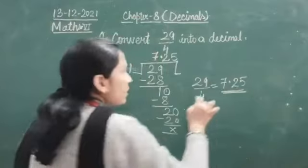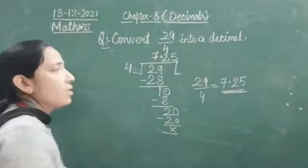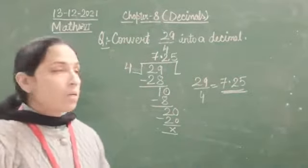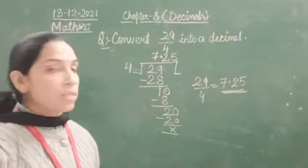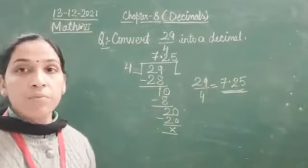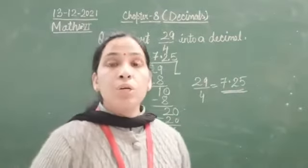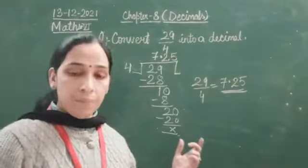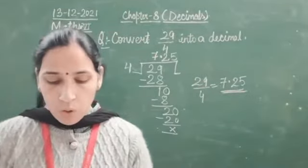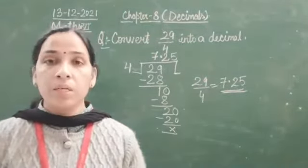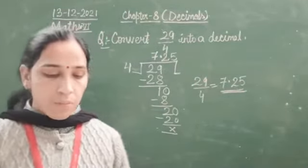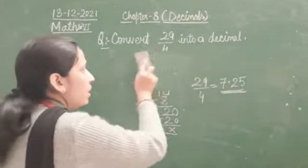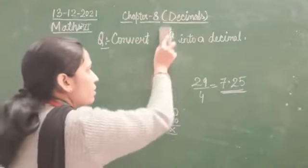This will be the decimal representation or decimal number after dividing this 29 by 4. So, how to convert a mixed fraction into decimal — that also we will see.